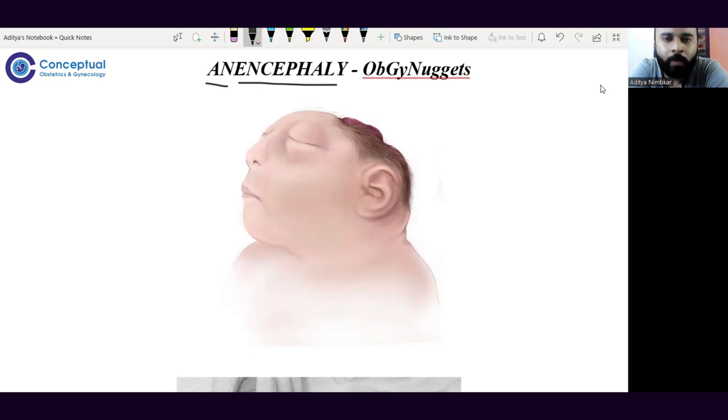Neurulation is the process in which the neural tube is formed, divided into primary and secondary neurulation. In patients with anencephaly, the primary neurulation process, especially the cranial or rostral part, is affected. But the secondary neurulation continues normally, so often there is no abnormality found in the spinal cord and rest of the CNS.